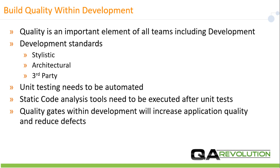It is important to build quality within development. These quality standards include stylistic, architectural, and third-party. Unit testing needs to be done, and you need to automate it if you can. Static code analysis tools need to be used and executed after unit tests are completed. Quality gates within development will increase application quality and reduce defects.